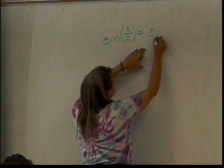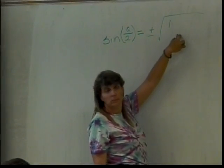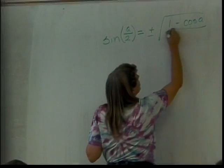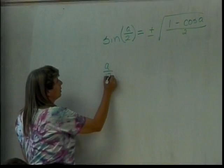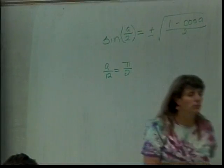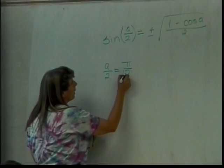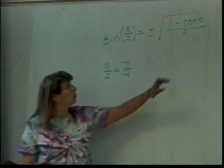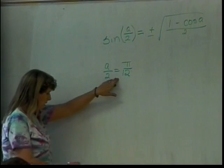This is going to be either plus or minus the square root of one, which was it? Minus the cosine of A divided by two. So I need A over two to be equal to pi over 12. I need to solve for A, because what I need to put in here is A, not A over two.